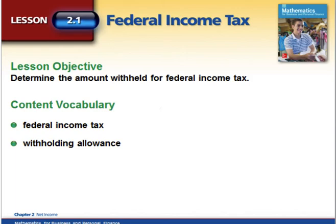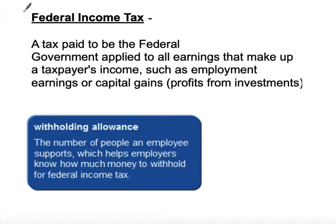The federal income tax is a tax paid to the federal government and it's applied to all of your earnings. Whether you've received a paycheck or you're receiving earnings on capital gains — like interest on savings accounts or from mutual funds or stocks — you'll have to pay federal income tax on those earnings as well. You probably won't do that weekly; you'll do it towards the end of the year or quarterly.